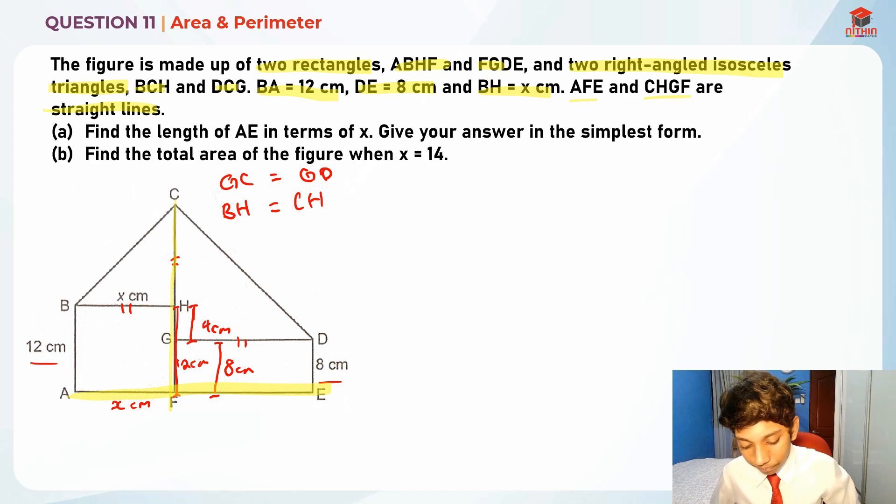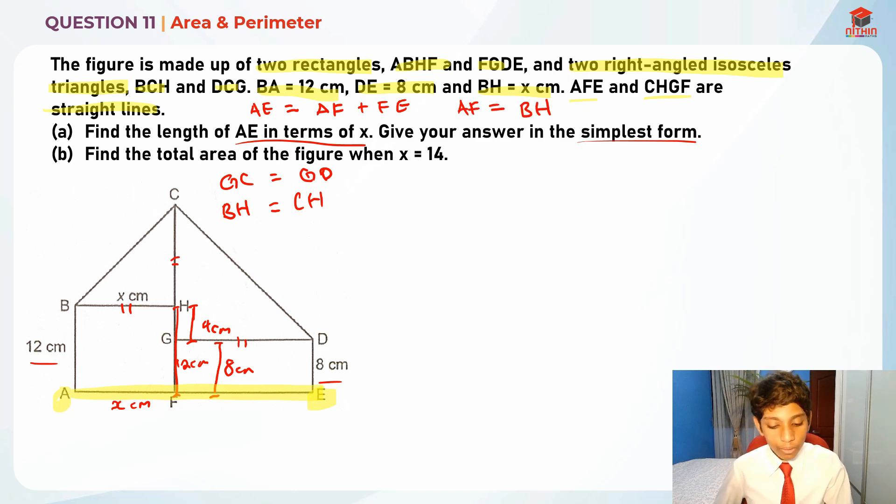AFE and CHGF are straight lines. For part A of the question, they are asking us to find the length of AE in terms of x. Give your answer in the simplest form. AE is basically a combination: AE equals AF plus FE. AF equals BH, and GD equals FE. This is really important.